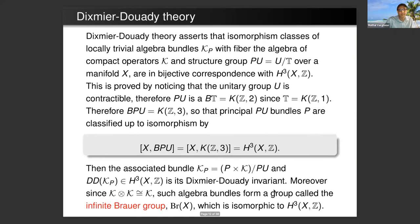The Atiyah-Singer index theorem for families says that the analytic index of D is equal to the topological index of D, and they are both in the K-theory of X. It's a vast generalization of the index theorem for a single operator and it turns out to have a lot more applications.